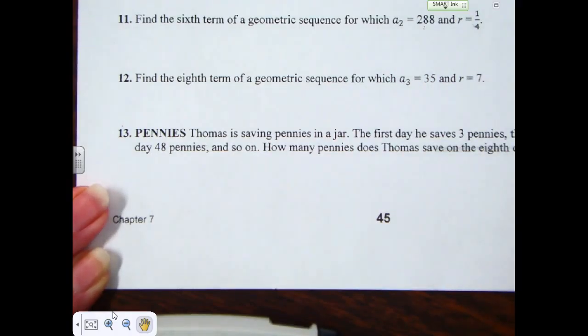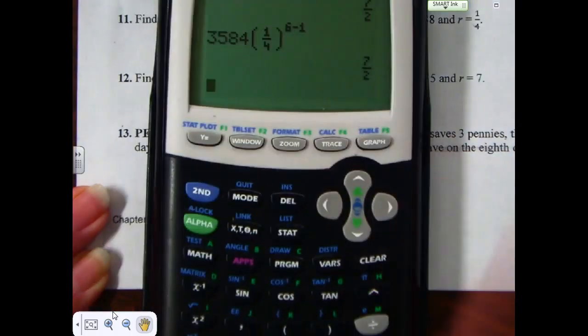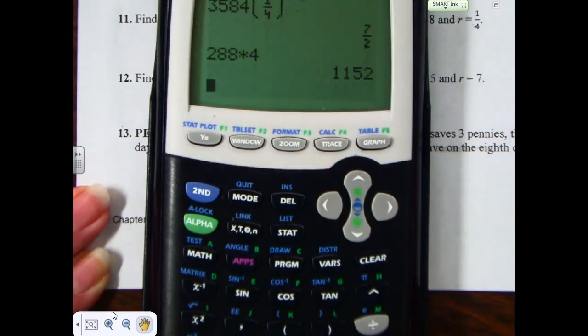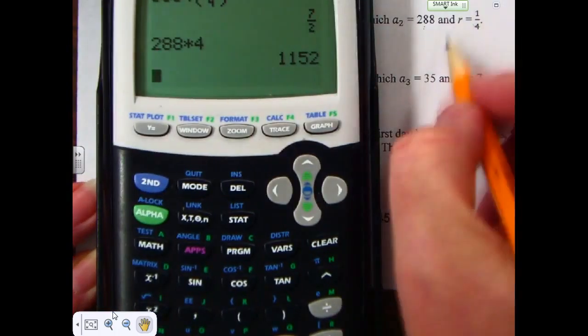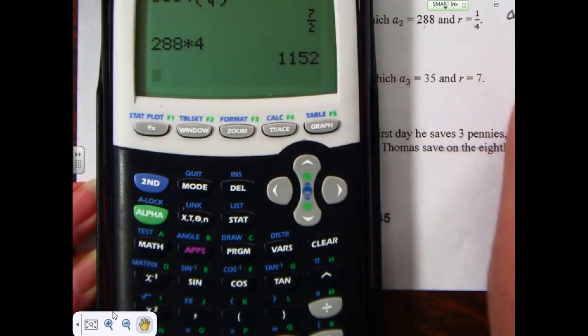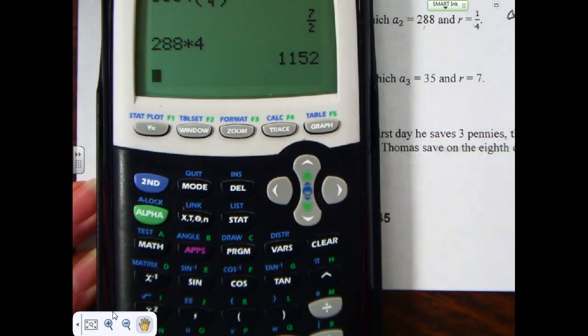So, if I work it out that way, I would multiply the 288 by 4, which is the inverse of the 1 fourth, and find that the first term would be 288 times 4 instead of times 1 fourth. My first term would be 1,152. Then, I can use the equation that A sub n is 1,152 times 1 fourth to the n minus 1 power.